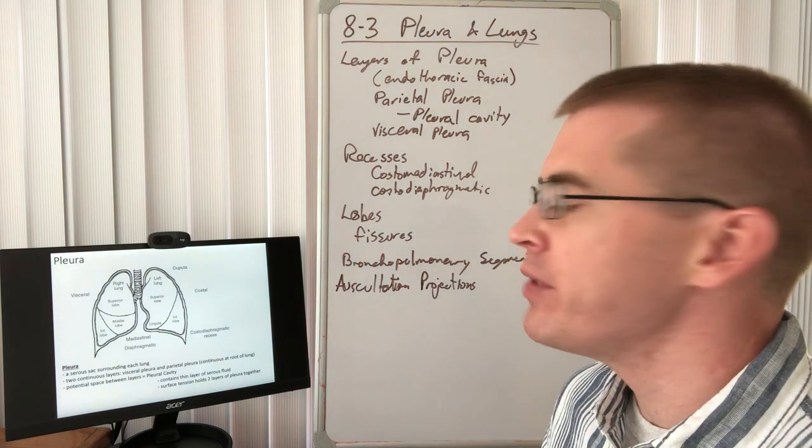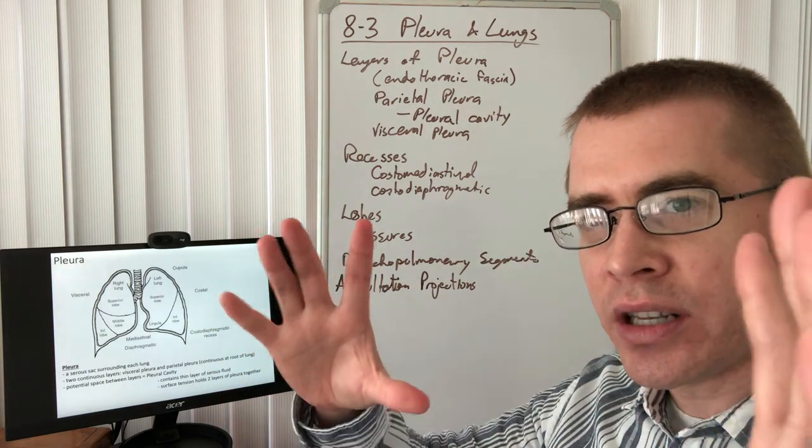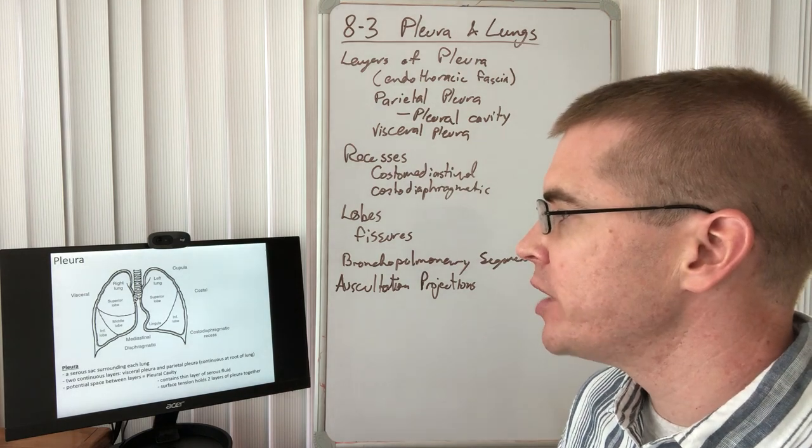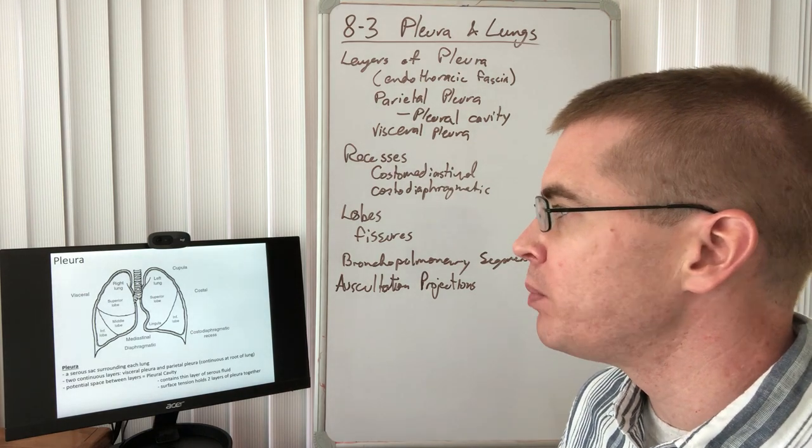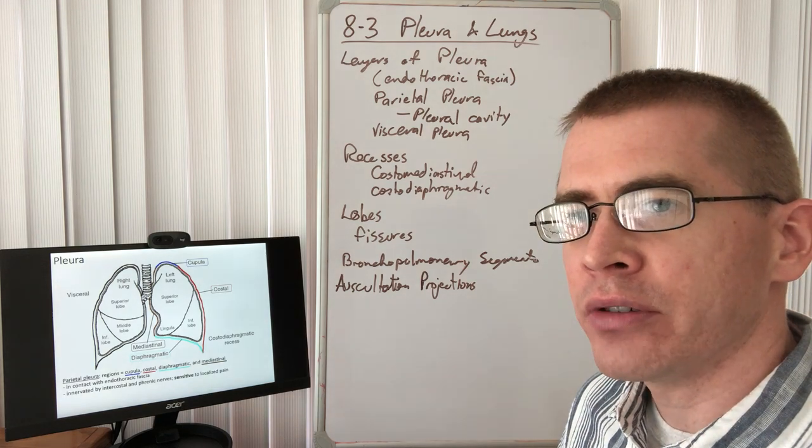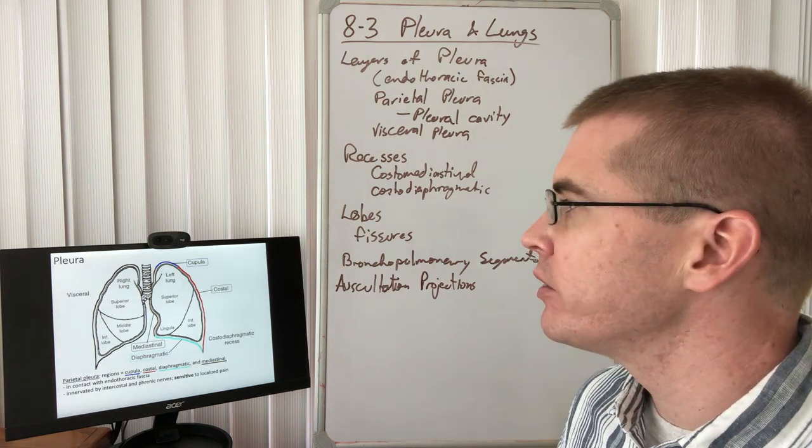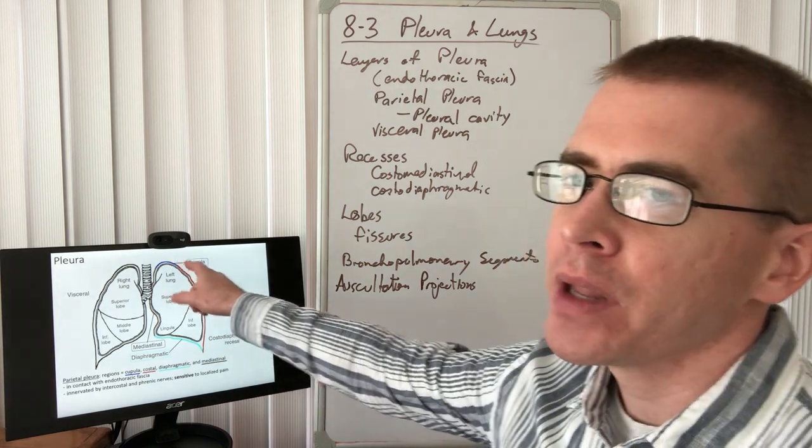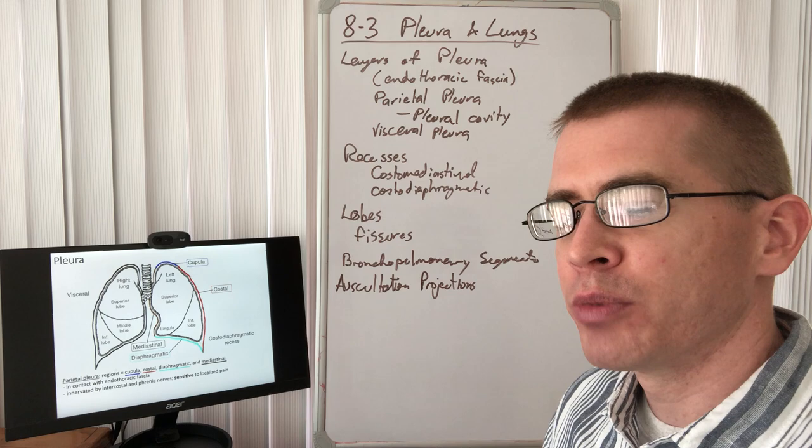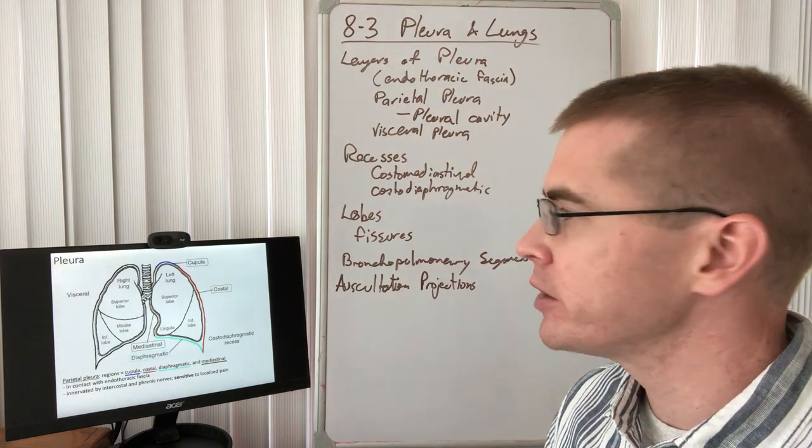First, we have the endothoracic fascia, which is on the inside of the thoracic wall. Closely associated with that is the parietal pleura. The parietal pleura is separated into four different regions based on its location. We see the cupola of the parietal pleura is closely associated with that superpleural membrane of the endothoracic fascia.